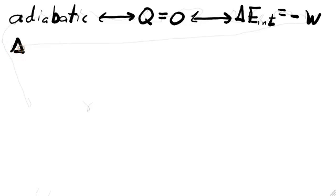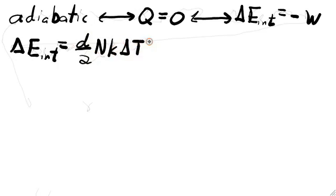There's one more type of ideal gas process we haven't talked about yet, the adiabatic process. An adiabatic process is defined by Q equals zero. So there's no heat flow, and delta E internal equals minus W. Now we'll use the equipartition theorem to say that delta E internal is just D over 2 times NK delta T. The work, of course, is still equal to the integral of PDV.